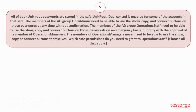Question number 5: All of your Unix root passwords are stored in the safe Unix root. Dual control is enabled for some of the accounts in that safe. The members of the AD group Unix admins need to be able to use the show, copy, and connect buttons on those passwords at any time without confirmation. The members of the AD group operations staff need to be able to use the show, copy, and connect buttons on those passwords on an emergency basis, but only with the approval of a member of operations managers. The members of operations managers never need to be able to use the show, copy, or connect buttons themselves. Which safe permissions do you need to grant to operations staff?